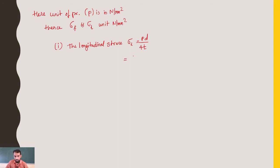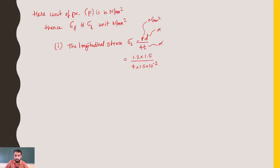Substituting values: σL equals 1.2 into 1.5 divided by 4 times 1.5 into 10 raised to minus 2. The meters in the numerator and denominator cancel, giving the result in Newton per mm square. The longitudinal stress comes out to be 30 Newton per mm square.